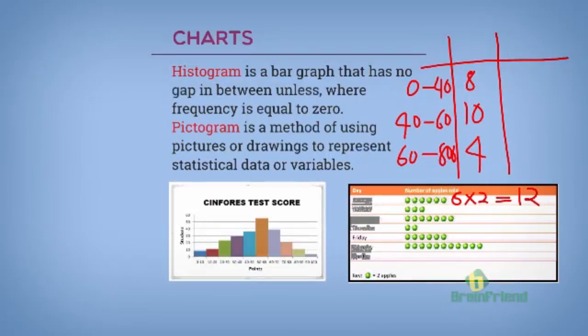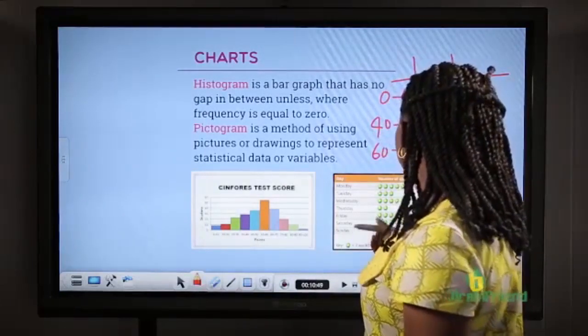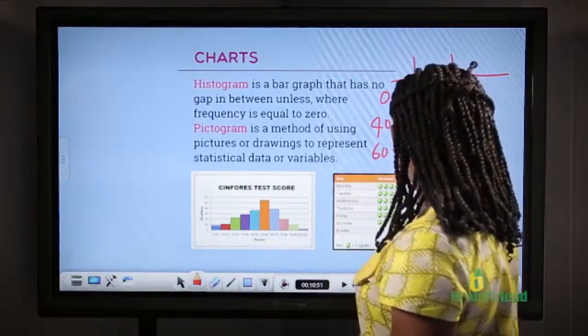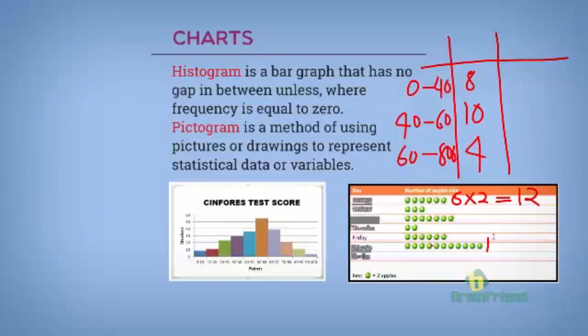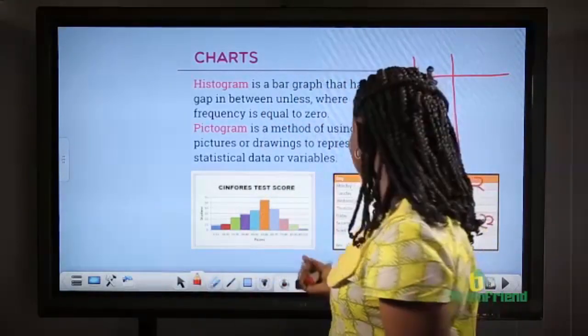Remember, the key is that 1 apple is equal to 2 apples. So, on Monday, 12 apples were produced. The same goes to Saturday. Saturday, we have 11 apples times 2, equal to 22 apples. You can make your keys to suit what you're trying to represent.